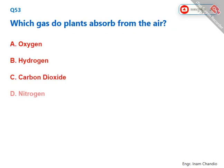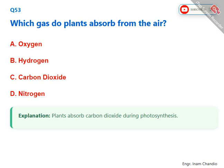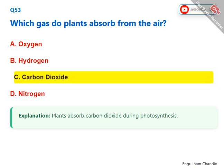Which gas do plants absorb from the air? Plants absorb carbon dioxide during photosynthesis. The correct answer is C. Carbon dioxide.